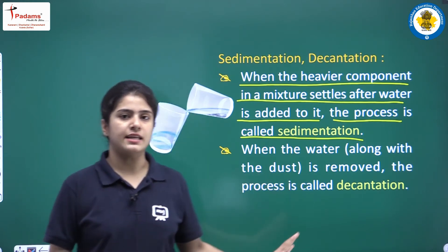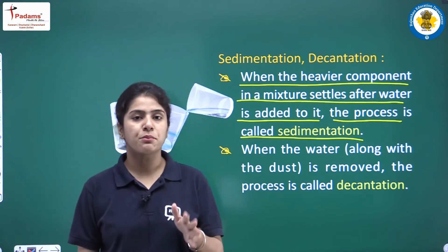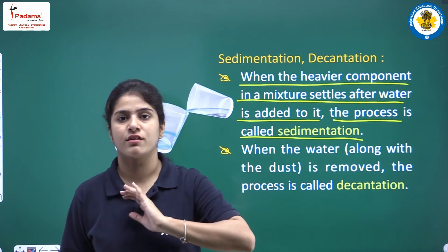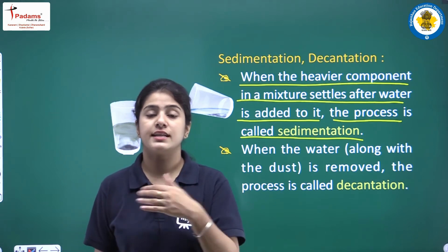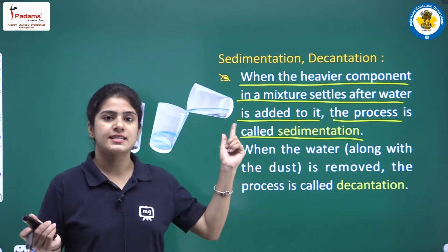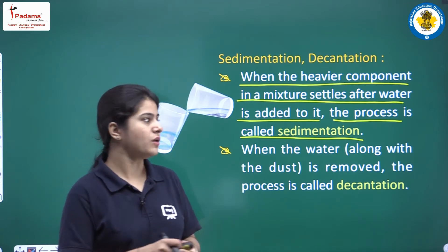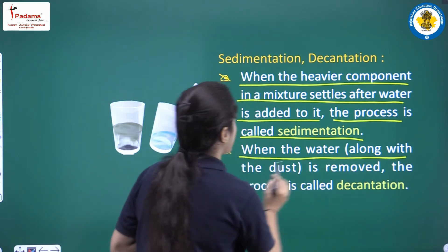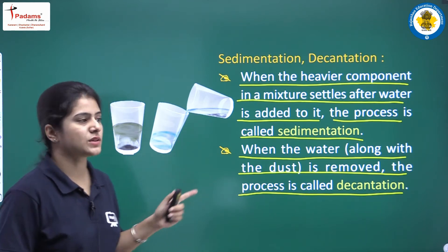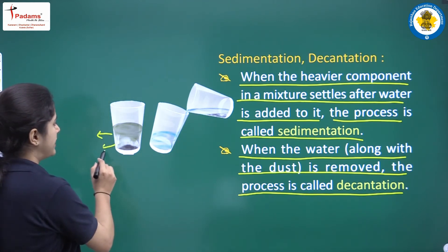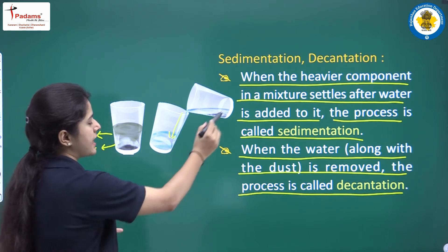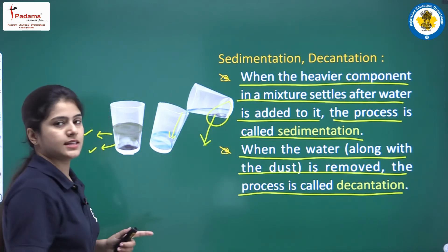Now, what is decantation? It is a very similar process. In decantation, you pour out that particular upper layer of water and separate the clean water from the sand. So sand and water are now separated with the help of sedimentation and decantation. When the water along with the dust is removed, the process is called decantation. Here is a picture of these processes — the mixture forms two different layers, and you pour out the lighter components into a separate glass while the heavy particles remain.